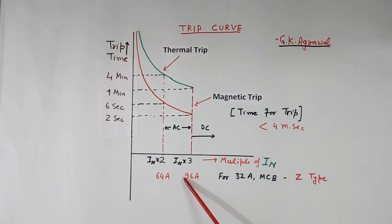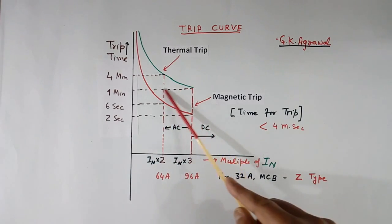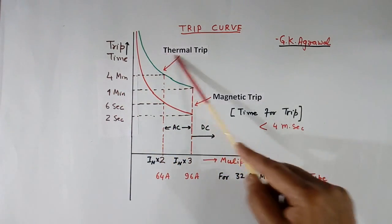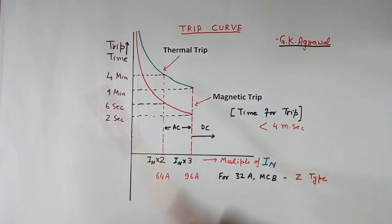Similarly, if current flows 3 times, more current flows, then trip time can be 2 seconds to 1 minute. This is for thermal trip because thermal trip requires heating, so it takes time.